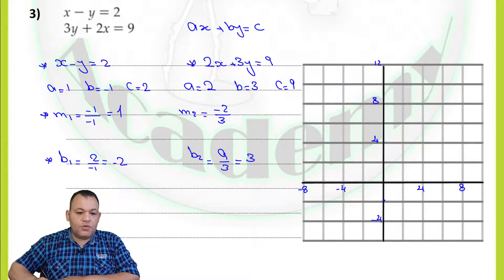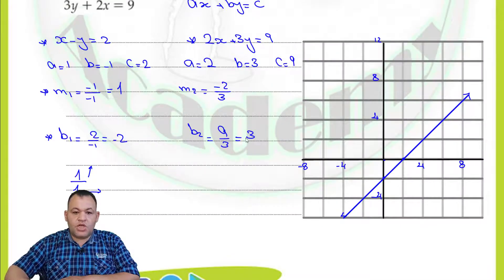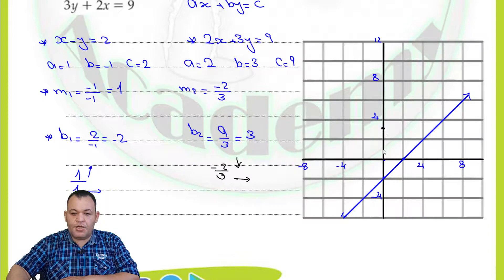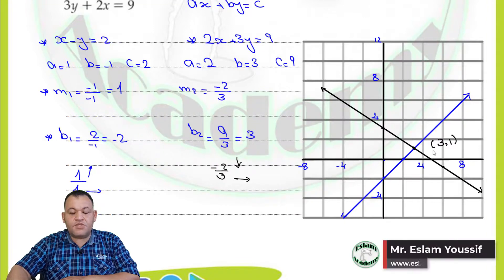Now we can graph the two lines. For line 1, starting from the y-intercept at negative 2 with slope 1 over 1 — rise 1 and run 1 — going up 1 and right 1, we draw the first line. For line 2, starting from the y-intercept at 3, with slope negative 2 over 3 — going down 2 and right 3 — we identify the second point and draw the line. By graphing, you will find the two lines intersect at one point with coordinates (3, 1), so the solution for this system is (3, 1).